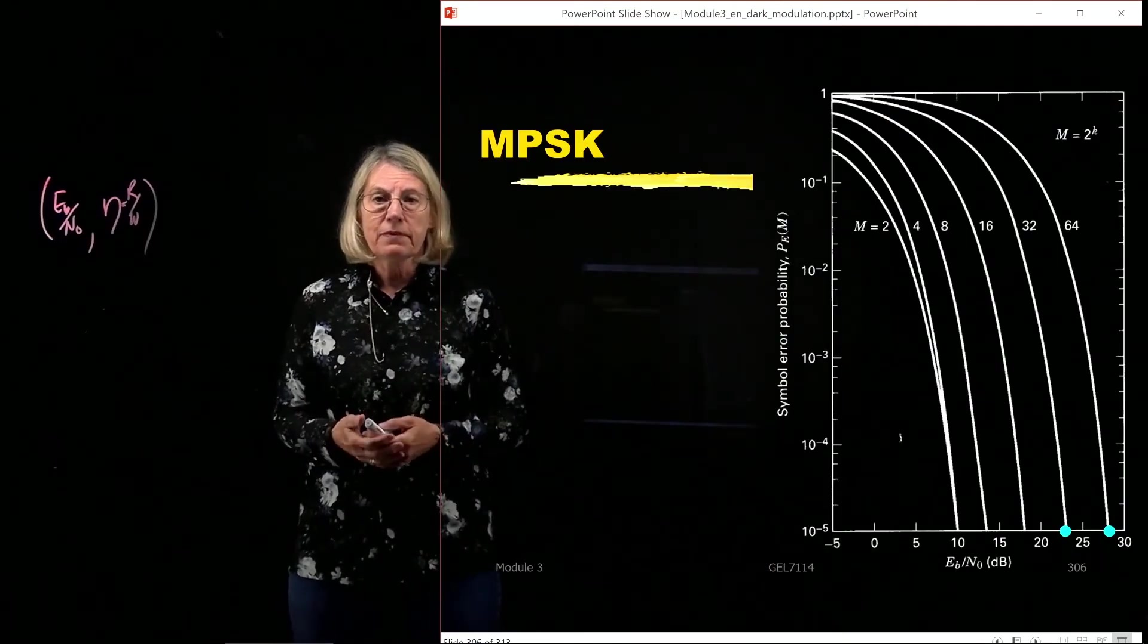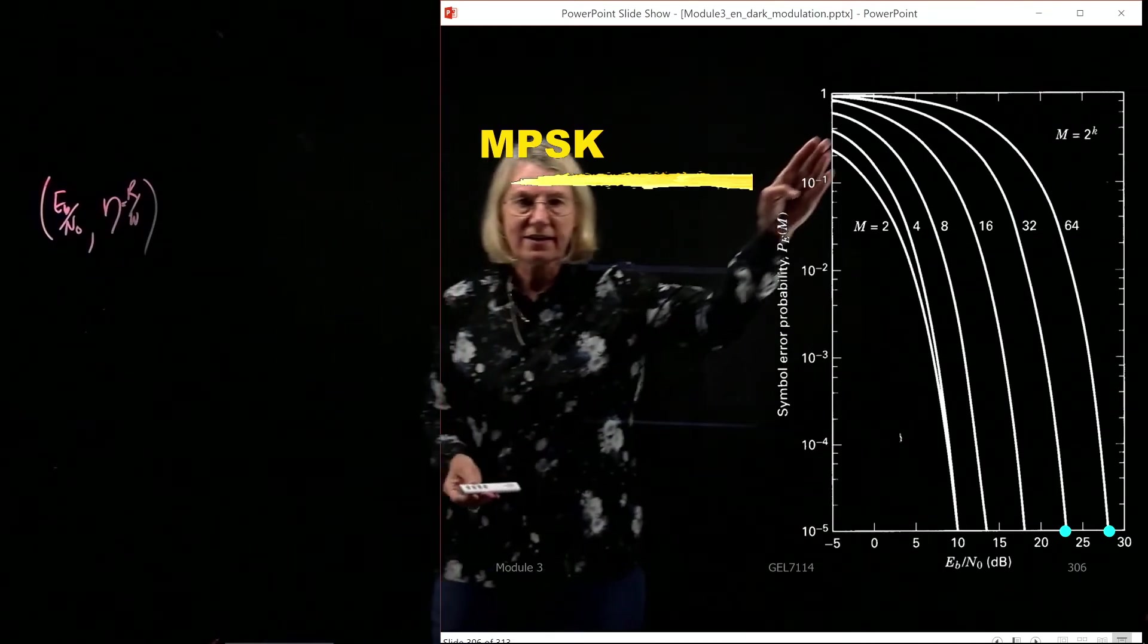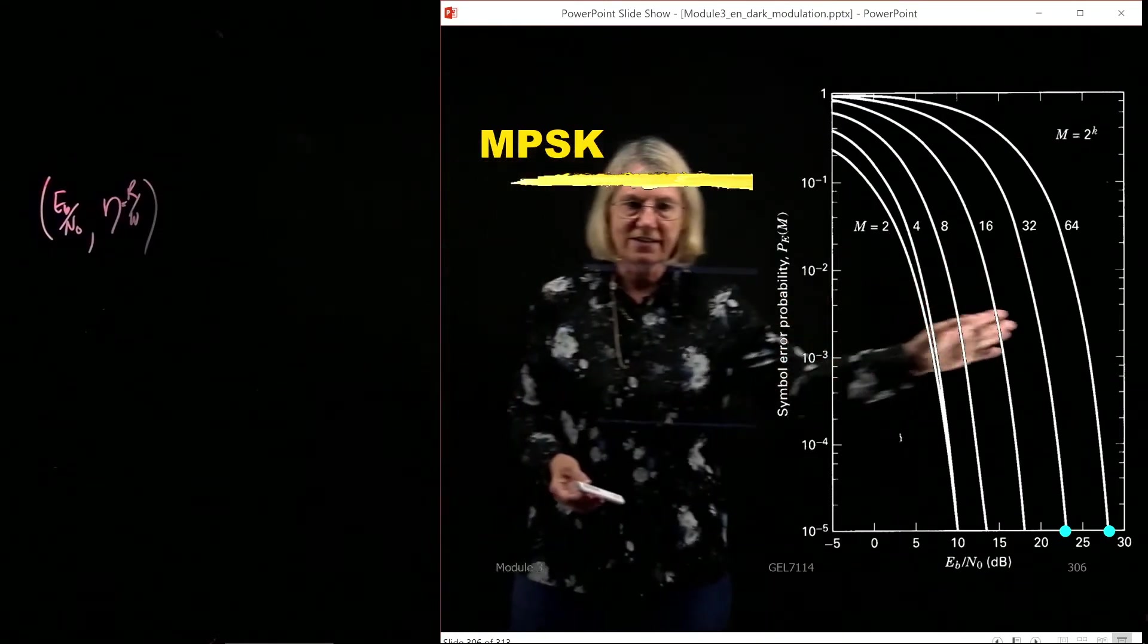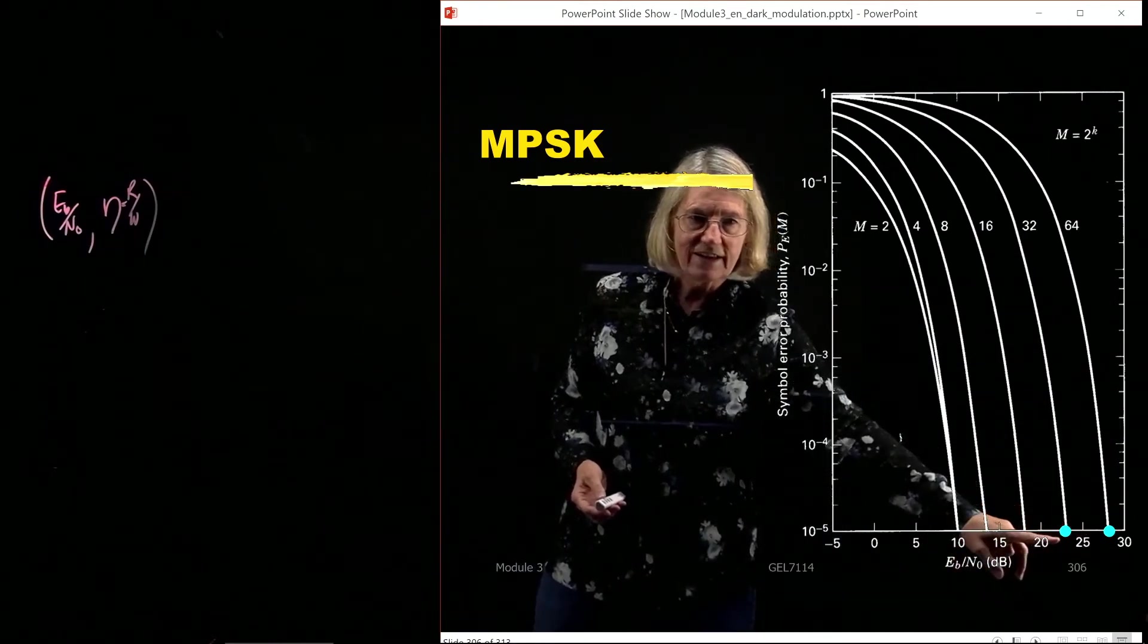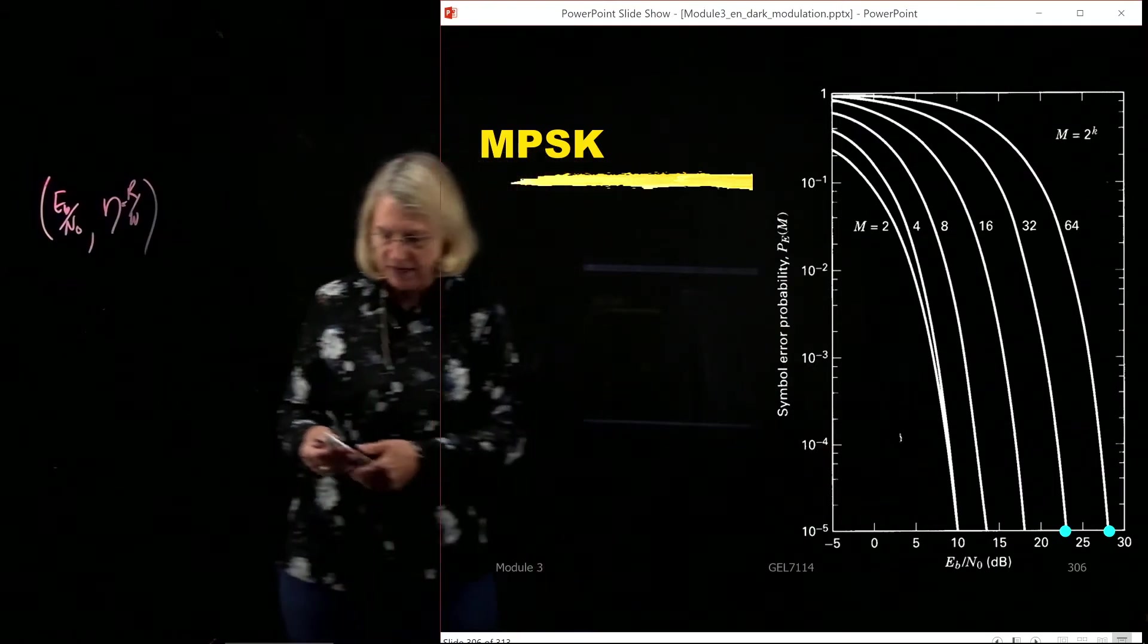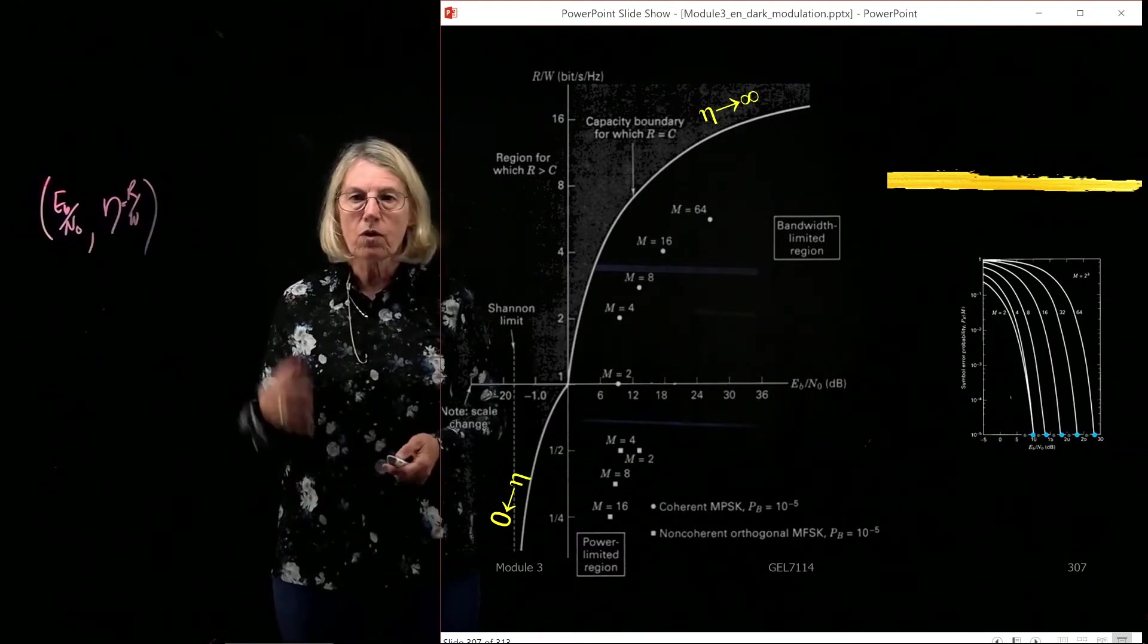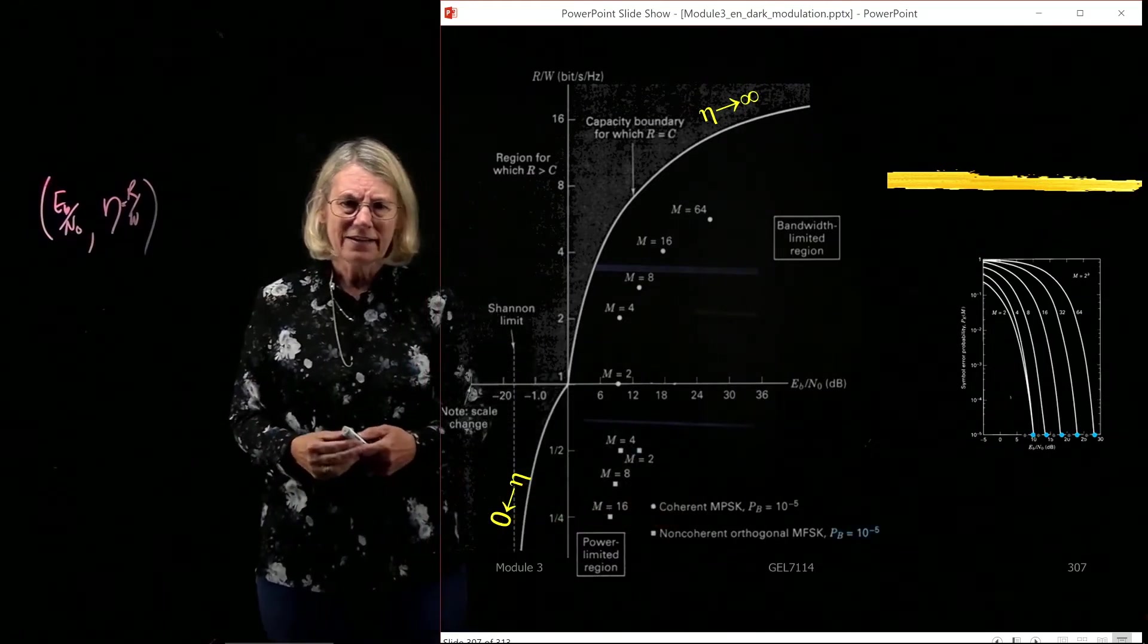Now I could do the same thing for MPSK. Here I've plotted BPSK, QPSK, 8, 16, 32, 64, and of course if I look at 10 to the minus 5, I can look at what Eb over N0 I need. And as M is increasing, I'm needing more and more Eb over N0.